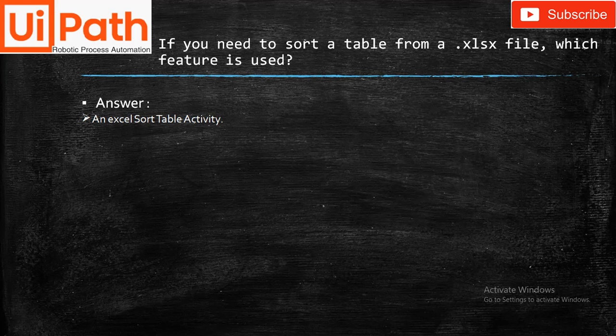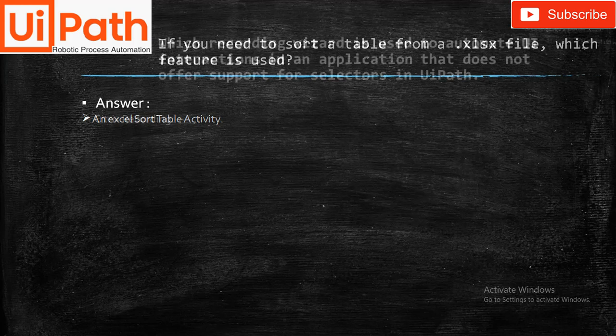If we want to sort a table from a .xls file, which feature is used? The answer is: an Excel Sort Table activity will be used for sorting data in an Excel file. If you've already watched the Excel session, this answer should be very easy for you.